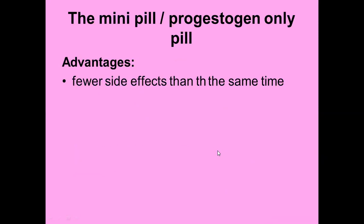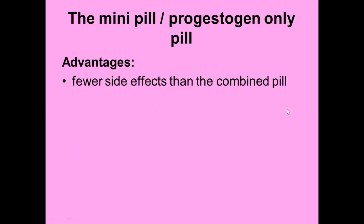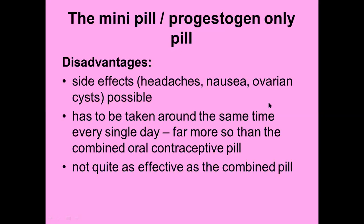Perfect use less than one, typical use five. Fewer side effects than the combined pill — an advantage — but there are some side effects such as headaches, nausea, and possible ovarian cysts. It has to be taken around the same time every day — far more so than the combined oral contraceptive pill — because it has a low dose of only a single hormone, so if not taken at the same time every day, hormone levels in the blood may decrease. It is not quite as effective as the combined pill.